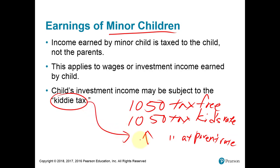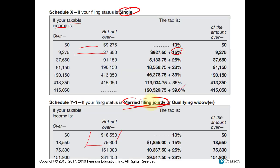Once the child is no longer a dependent — probably an adult — the regular tax rates kick in. They get a regular standard deduction and regular rates again. To recap: kiddie tax gives zero tax on the first $1,050, 10% on the next $1,050, and then the parents' high rate on anything over $2,100. Once the child is not a dependent anymore, they fall back into the regular rates — no more kiddie tax.